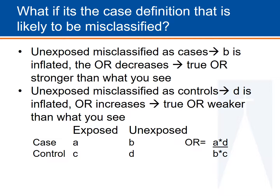Carrying the example further, if the misclassification occurs such that the unexposed are being misclassified as cases, B is inflated and the odds ratio decreases. In that case, the true odds ratio is stronger than what you see because misclassification has obscured the result. Finally, if the unexposed are more likely to be misclassified as controls, the D group is inflated. The odds ratio increases and is therefore artificially inflated. The true odds ratio is weaker than what you see.